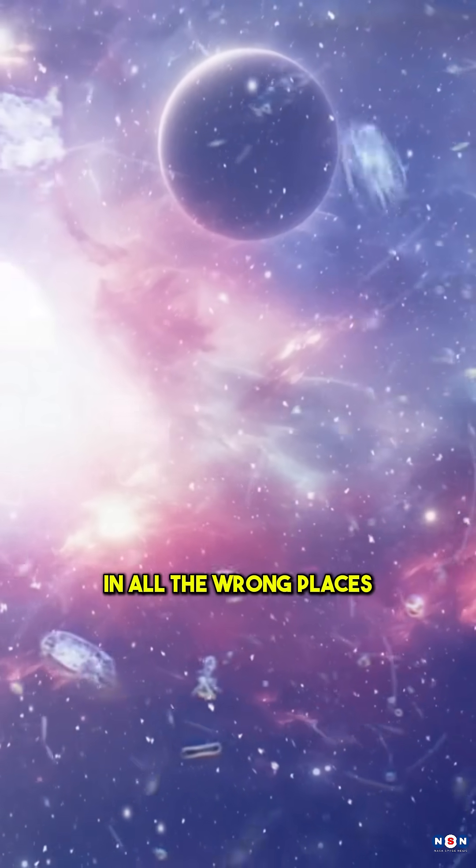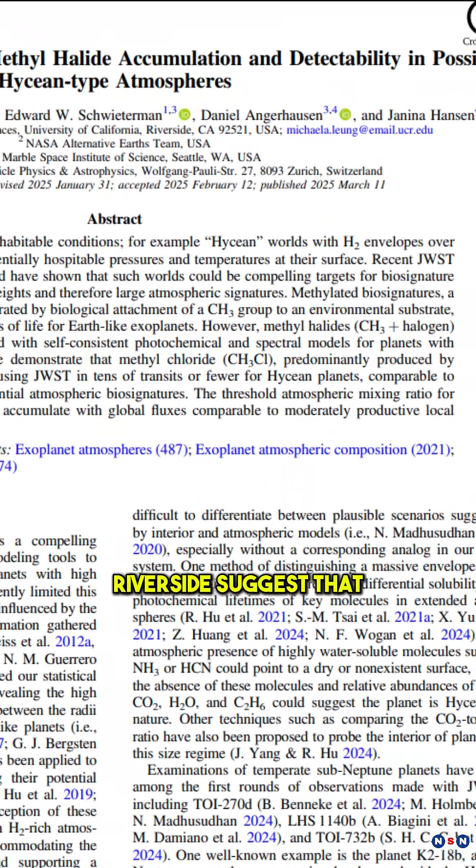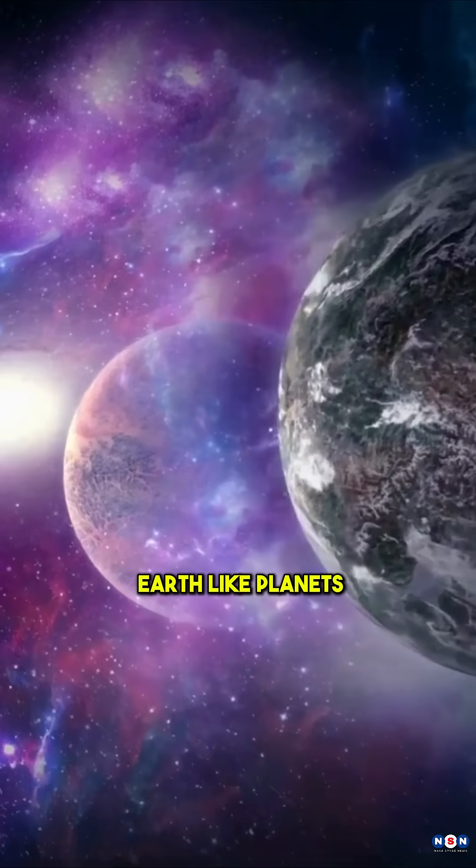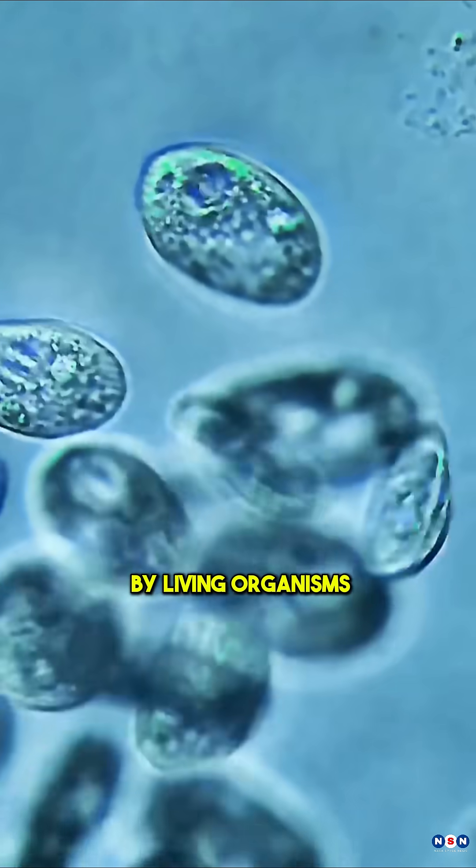Could we be looking for alien life in all the wrong places? Scientists from the University of California, Riverside, suggest that instead of searching for Earth-like planets, we should be looking for methyl halides, gases produced mainly by living organisms on Earth.